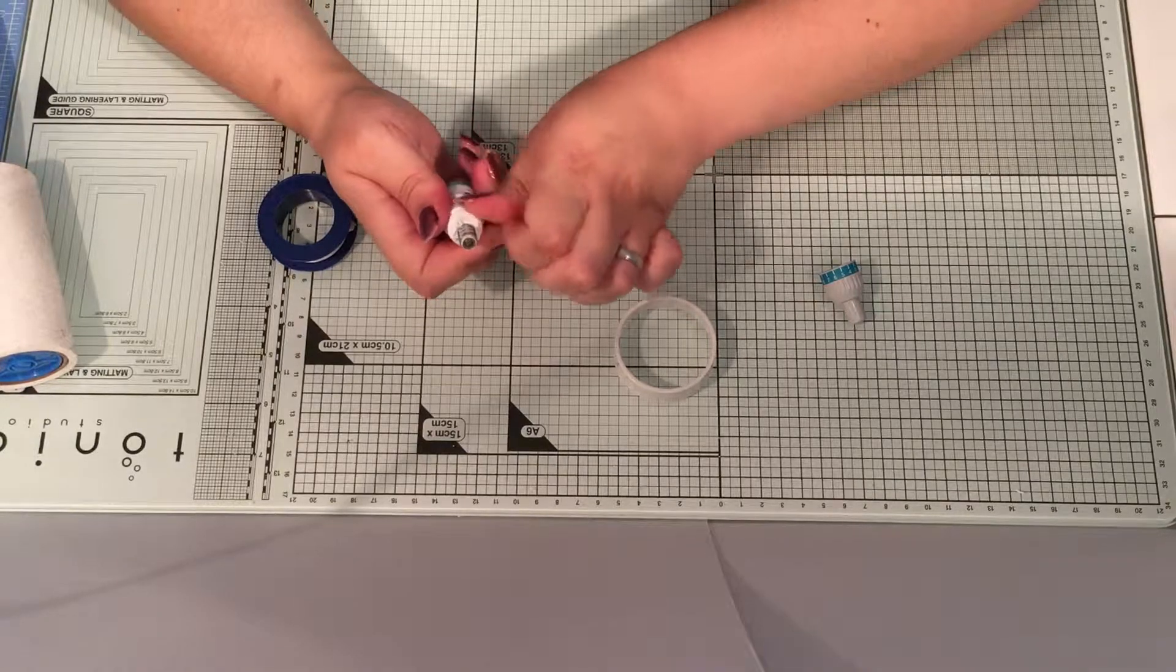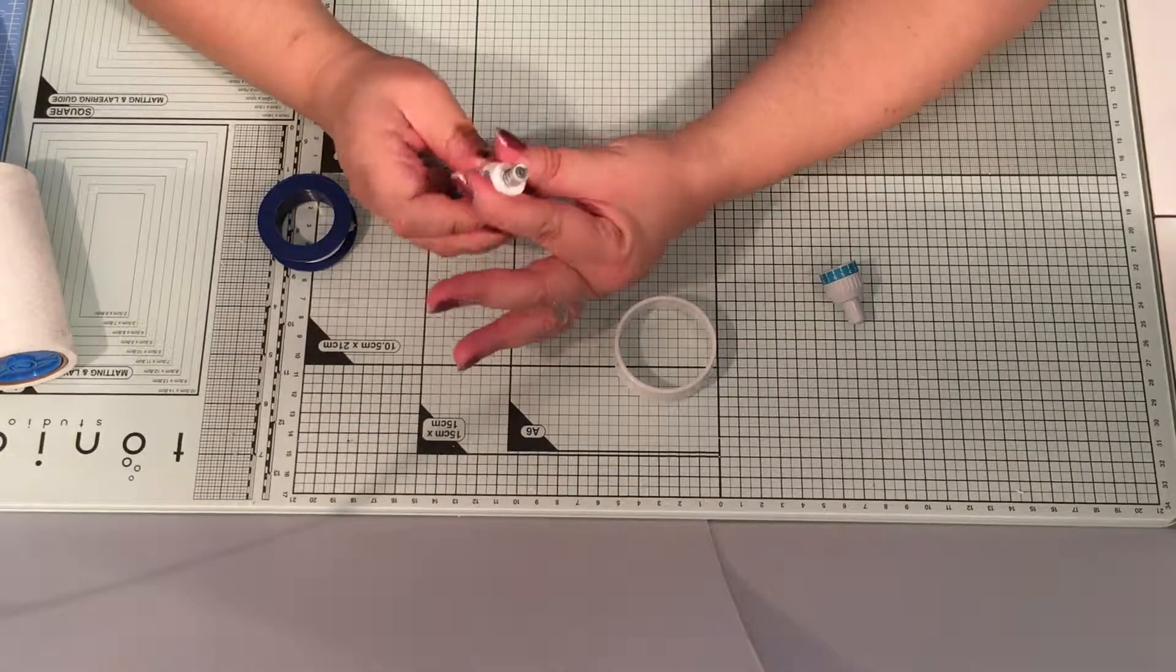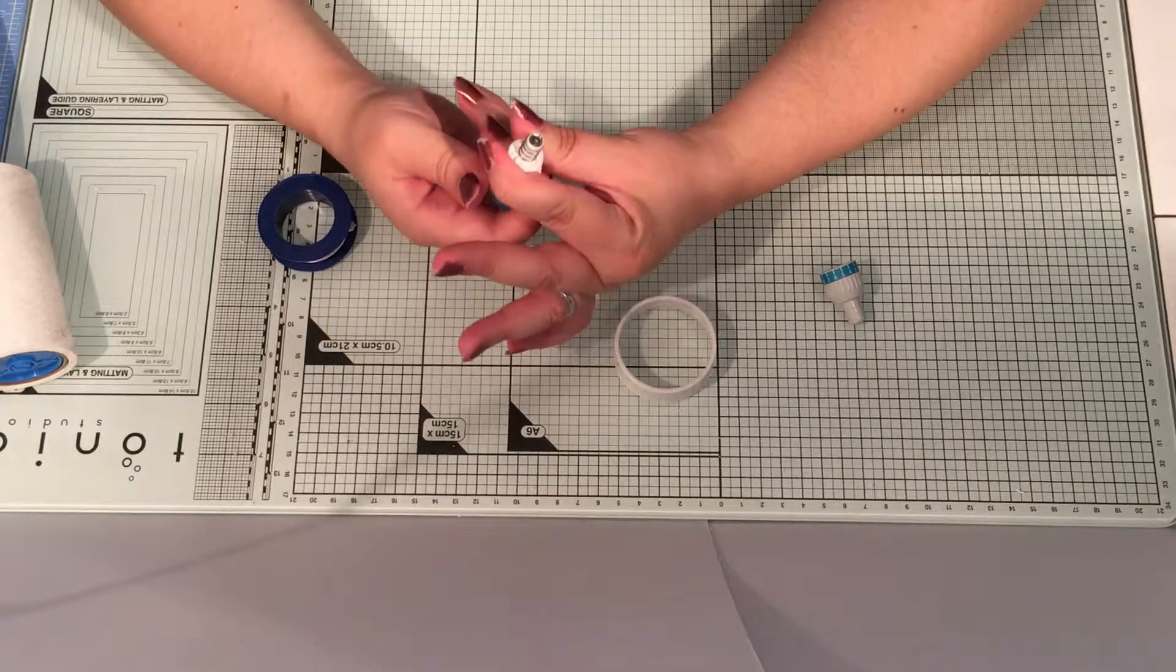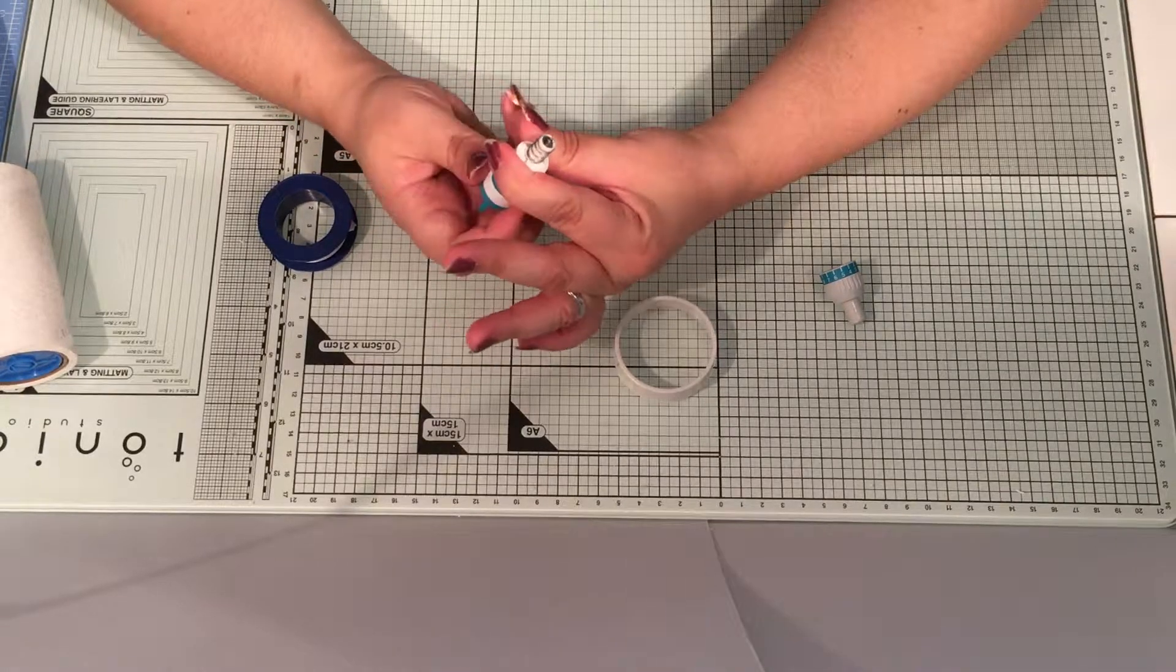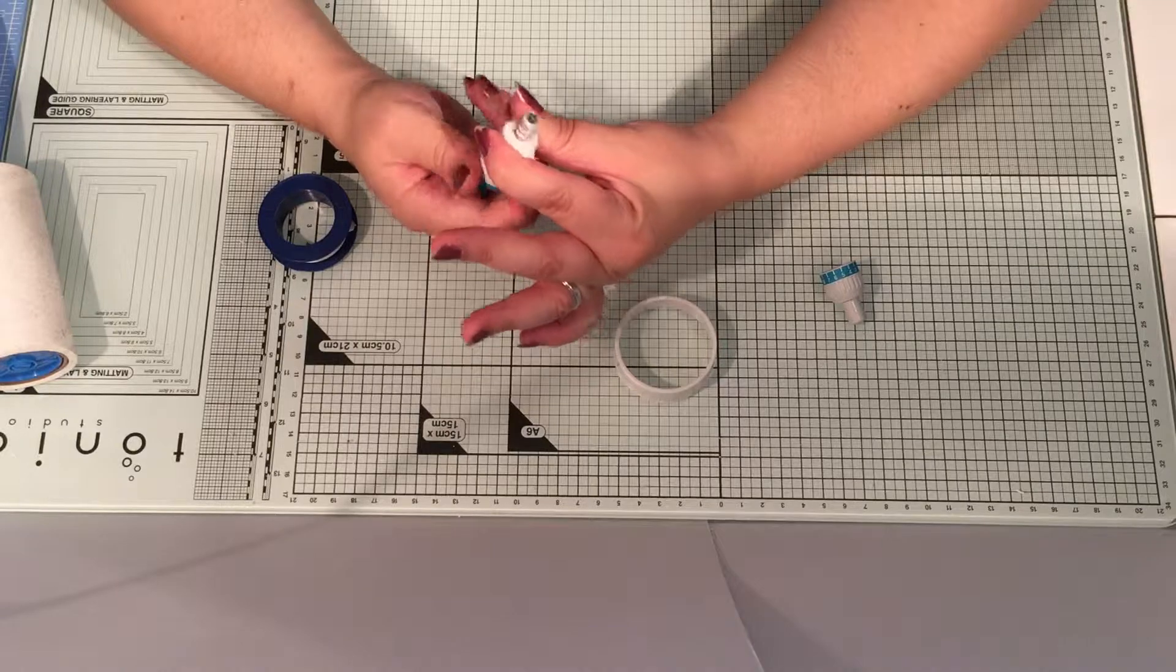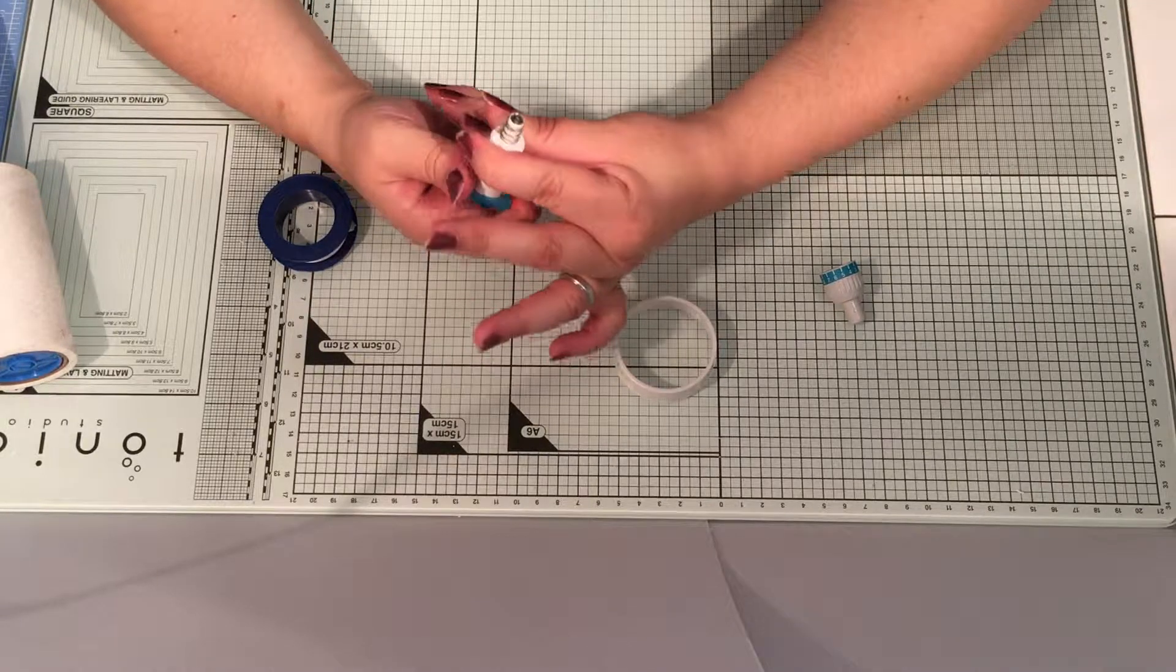There we go. And then rub your fingers around it and that will just help seal it into the screw thread. You can always apply more tape if you need to.